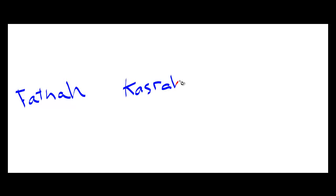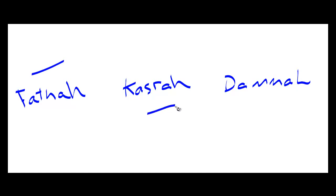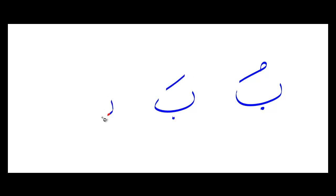Now just to review these quickly, in case you call them something different, I'll tell you what I call them and what most Arab speakers call them: fatha, kasra, and dhamma. Fatha is a tick on top, kasra is a tick on the bottom, and dhamma is a little nine above the letter. So for example, if I have the letter ba and I put a dhamma on it, it becomes bu. If I put a fatha on it, it becomes ba. And if I put a kasra on it, it becomes bi. Easy enough.